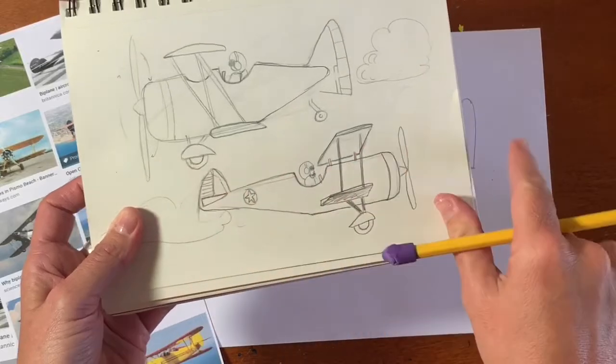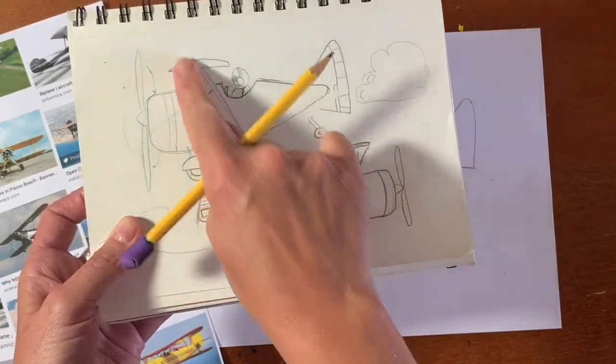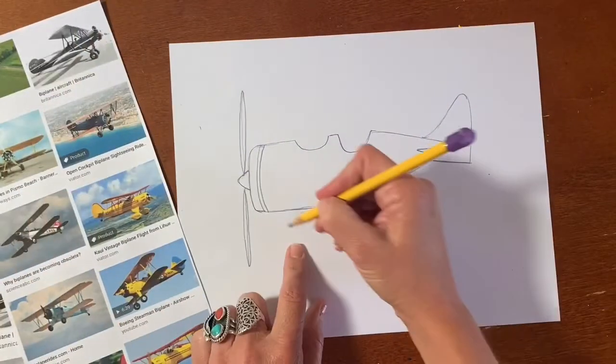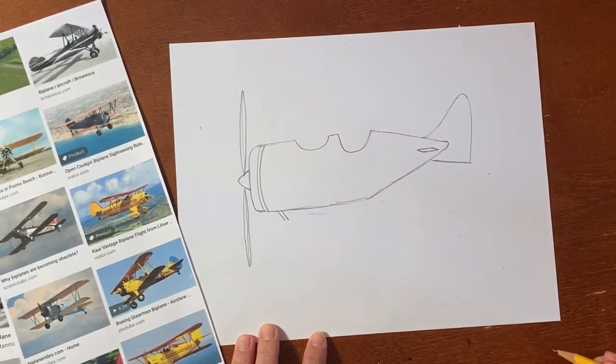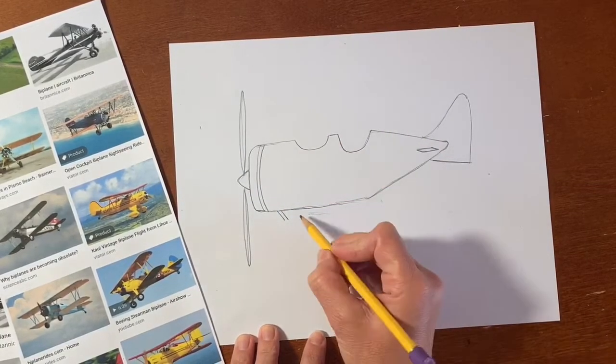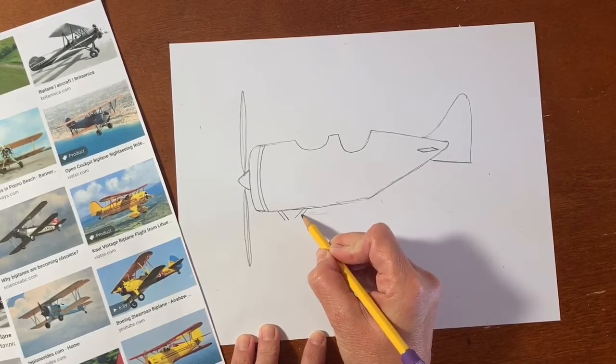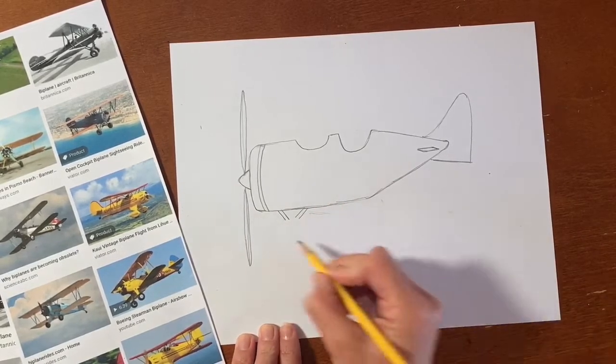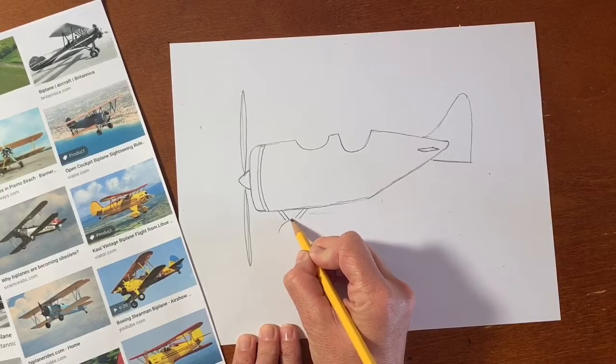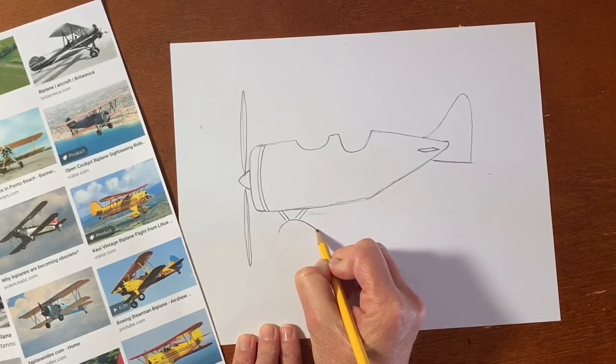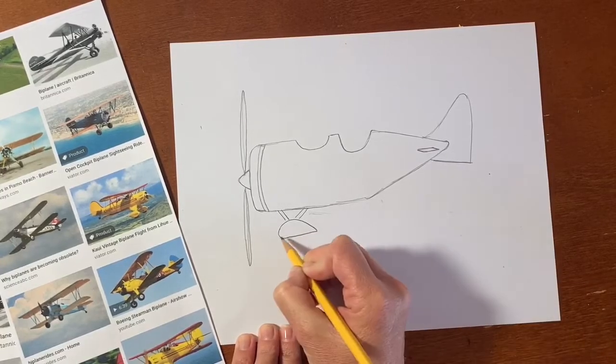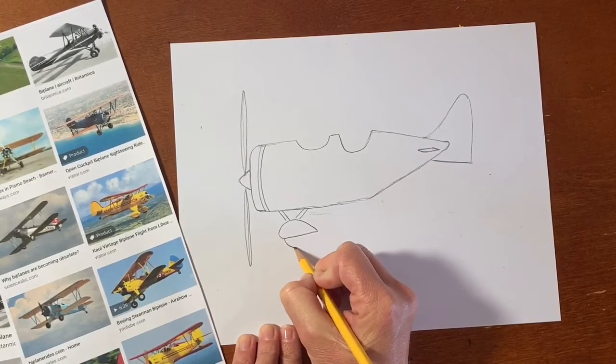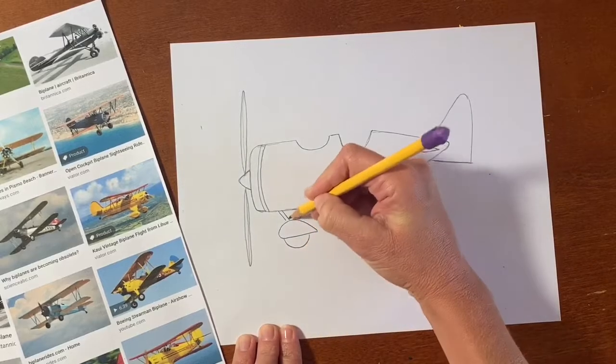We're going to add the front wheel and then we'll add the wings, the top and the bottom wing. Two short diagonal lines going in one direction and then two short lines going in the opposite direction. And then you connect them with a curve. This is like a wheel well for the airplane wheel. And then a little bit, like a half circle, there you go.